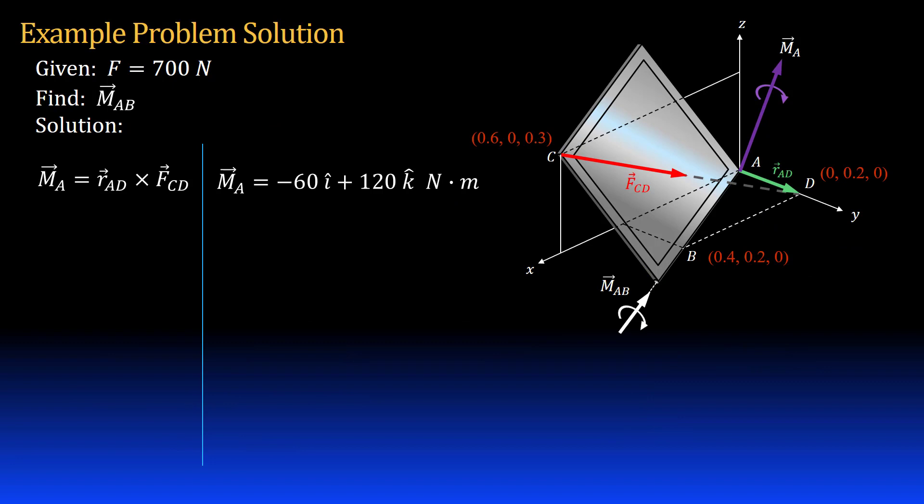Now that I have vector M_A, the moment vector about point A, I need to project it about the axis of the hinge. I do that by dotting vector M_A with a unit vector in the direction of axis AB. First I need to get unit vector u_AB by dividing a position vector from A to B by its magnitude. Here it is.